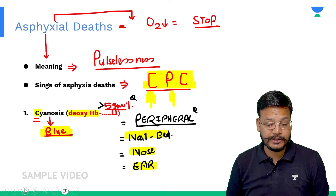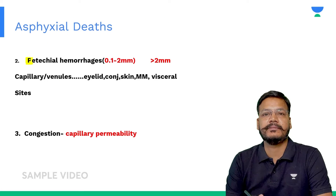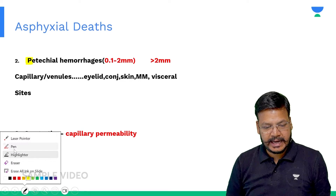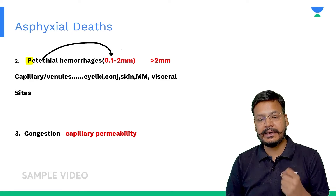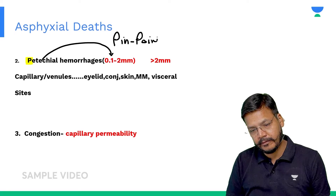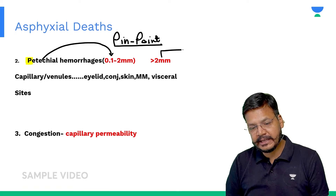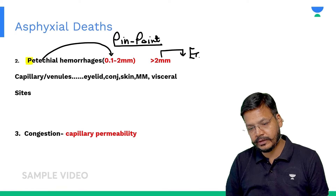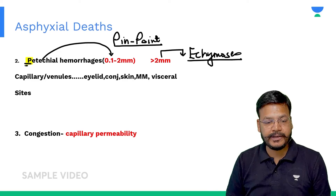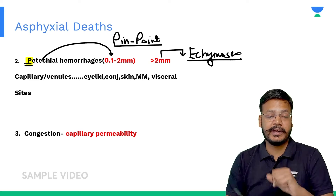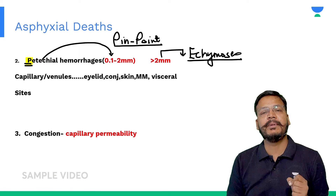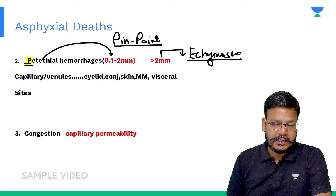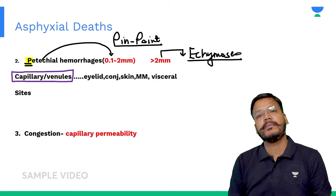The second is P — P for petechial hemorrhages. If the size of hemorrhage is 0.1 to 2 mm, that is a pinpoint hemorrhage known as petechiae. If the size is more than 2 mm, it is known as ecchymosis. Generally we see petechial size, that is pinpoint hemorrhages. This is an important exam question: 0.1 to 2 mm is petechiae, more than 2 mm is ecchymosis.